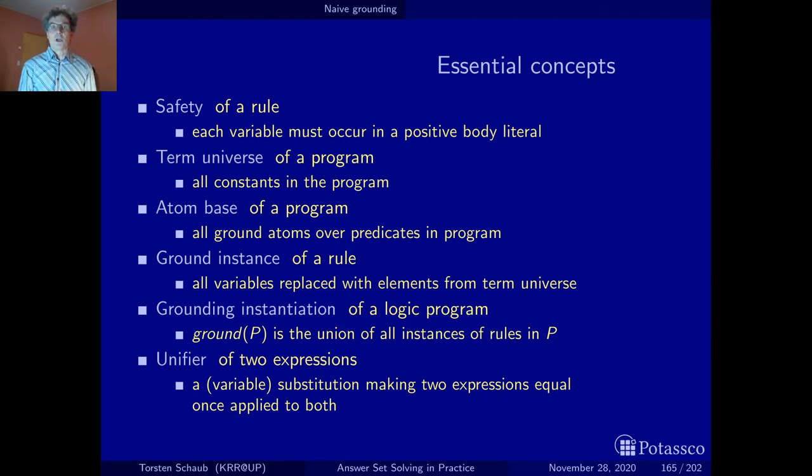This was already much more explanation that I wanted to provide, but this is more or less the idea. A unifier of two expressions is a variable substitution, and once you apply them to both expressions, they are the same. And again, I think this is a very common concept in computer science, of course, in logic or in proof theory, logic programming, and so on and so forth. No problem for you to briefly deepen this notion if need be. And now I zip it, and let's look now at our first example, where we actually apply just naive grounding on the Hamiltonian circuit example we've seen before.